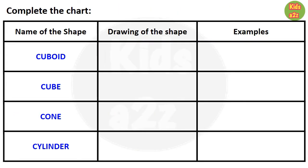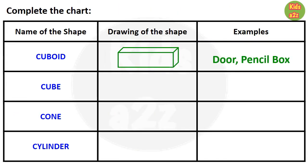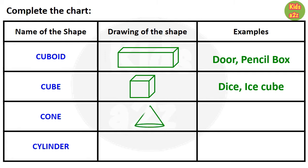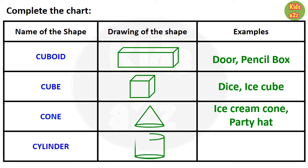Now for cuboid, they need to draw the shape and examples are door and pencil box. For cube, examples are dice and ice cube. For cone, examples are ice cream cone and party hat. And for cylinder, examples are battery and soda can.